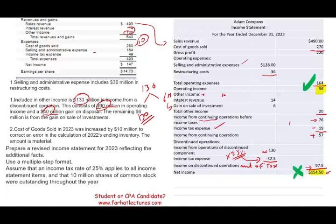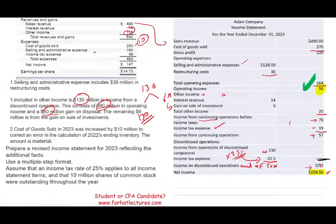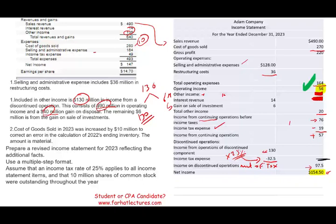The discontinued operation income is not only unsustainable, it's actually going away — we are told this discontinued operation will be gone because we sold that division. So don't count on that $97.5 million. Whatever the reason for selling the division, what we focus on is the $56 million from continuing operations.